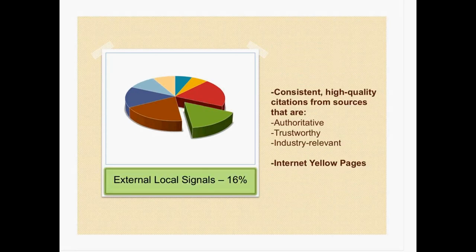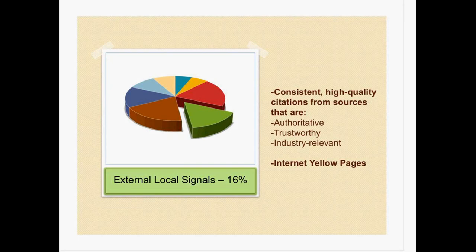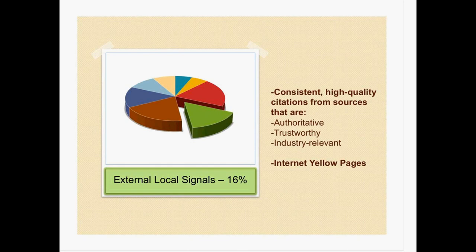Next, we have external local signals, which make up 16% of ranking factors. These are consistent, high-quality citations from sources that are authoritative, trustworthy, and industry-relevant. Citations mean having your name, address, and phone number on different online directories like Internet Yellow Pages, Yelp.com, SuperPages.com, City Search, My Yellow Book, even Facebook Local, and dozens more. This is something you can get an intern to do over a summer or a few weeks — just go through these citations and make sure all your information is accurate and up-to-date.